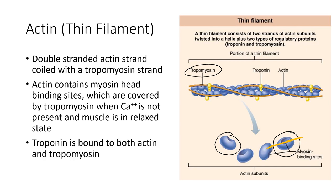There's a second molecule on the actin called troponin. Troponin is a regulator protein that is bound both to tropomyosin and to the actin. When calcium enters the system, the calcium will bind to the troponin, and that will cause the tropomyosin to slide off of the binding sites. At that point, you have open access for the myosin to bind, which will then be the beginning of muscle contraction.